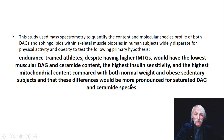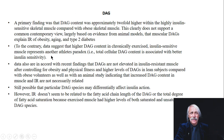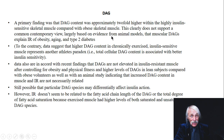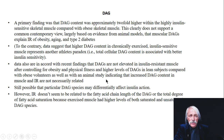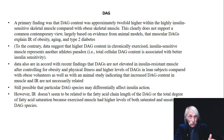The primary finding is that DAG is approximately higher within the highly insulin-sensitive skeletal muscle compared with the obese. That does not support the common contemporary view that DAGs are dangerous. To the contrary, such elevated DAG might be what you want to see in chronically exercised athletic systems. Data also accord with recent findings that DAGs are not elevated in insulin-resistant muscle.